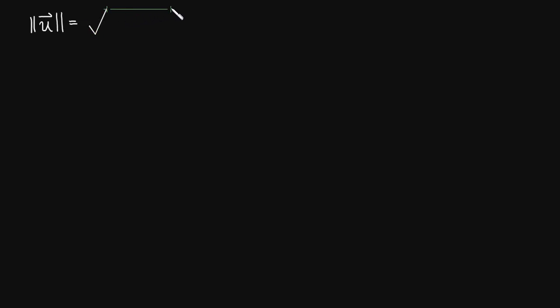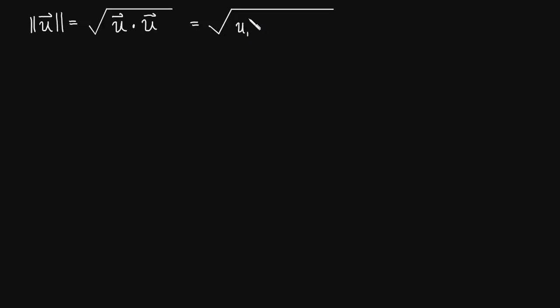Let's look at some interesting consequences of the dot product. The first one is the consequence it has for the definition of the length of a vector. Because of the way the dot product is defined, we can think of the length of a vector as the square root of the vector dotted with itself. This dot product is just u1 times u1, which is u1 squared, plus u2 squared, all the way up to un squared. That just comes from the definition of a dot product.